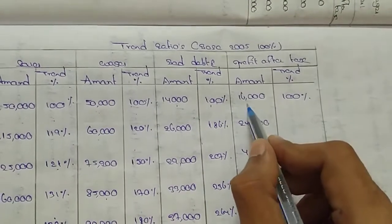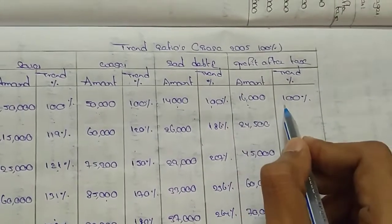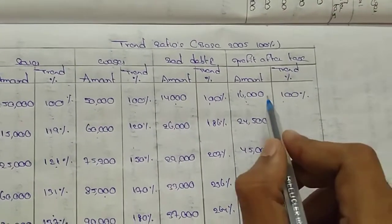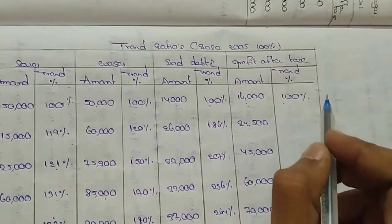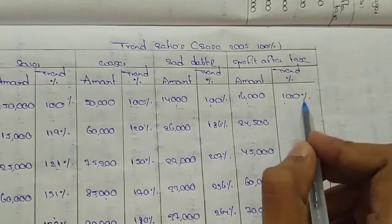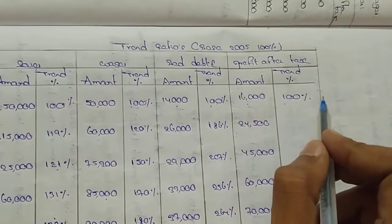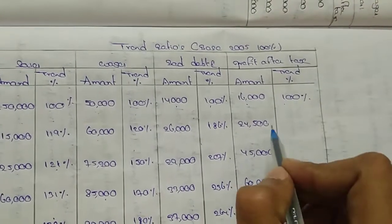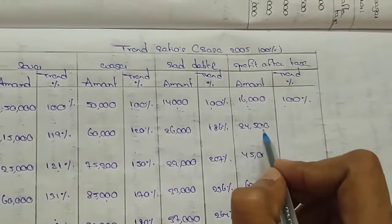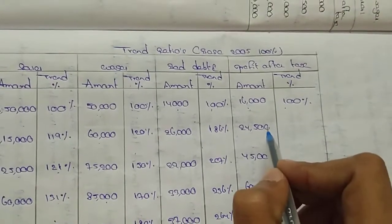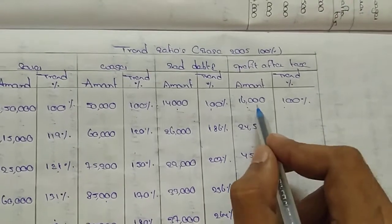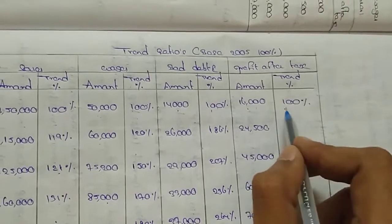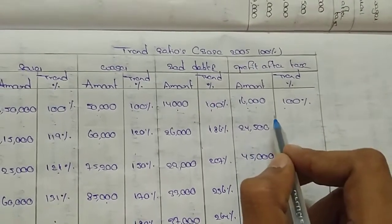16,000 divided by 100 gives the 1% value. Then 24,500 divided by that value gives the next trend percentage for the respective year.